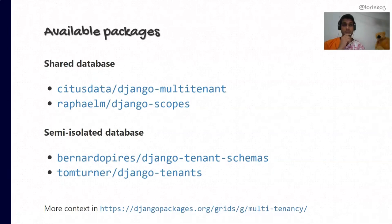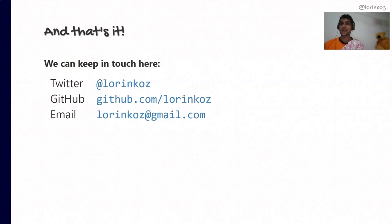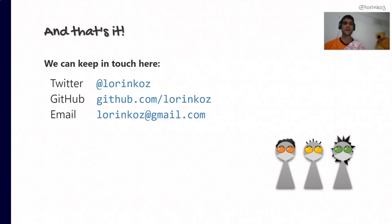Finally, let's look at some of the packages that can help you implement multi-tenancy in Django. Notice how the packages are classified by the architectural choice of database layout — two packages for the shared database approach and two for the semi-isolated database approach — and there are more in the multi-tenancy grid of djangopackages.org. I hope this talk has been useful in clarifying how Django and multi-tenancy play nicely together and what the underlying principles are to fit a thousand Djangos within a single Django. We can keep in touch on Twitter, GitHub, or email. And please remember that in times of global pandemics, face masks are the new cool. Good night.